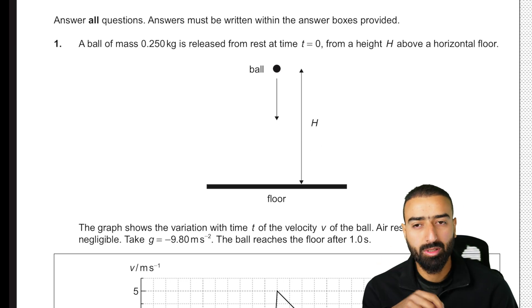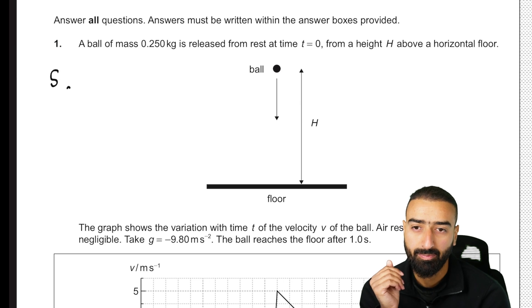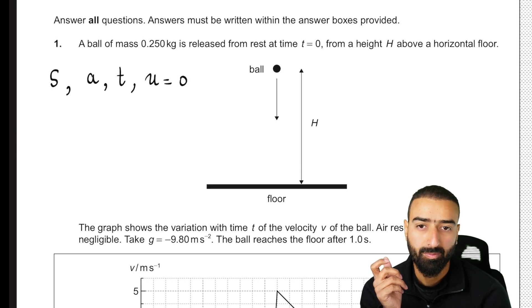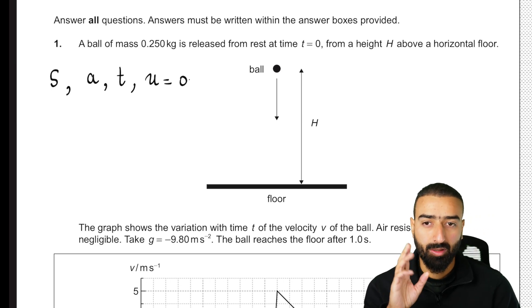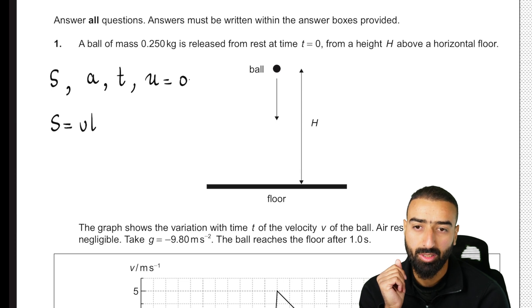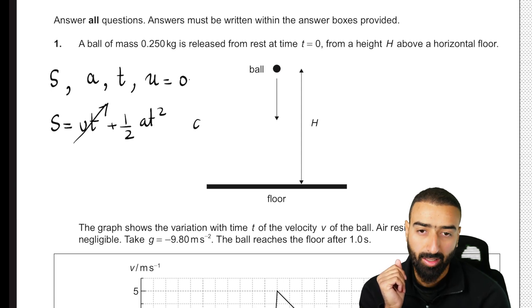One way to solve this problem is to use a relevant SUVAT equation. We are interested in finding the displacement. We know the acceleration, we know the time, and we also know the initial velocity which is 0 — because the object falls from rest. So this combination means we should use the equation S equals ut plus ½at².